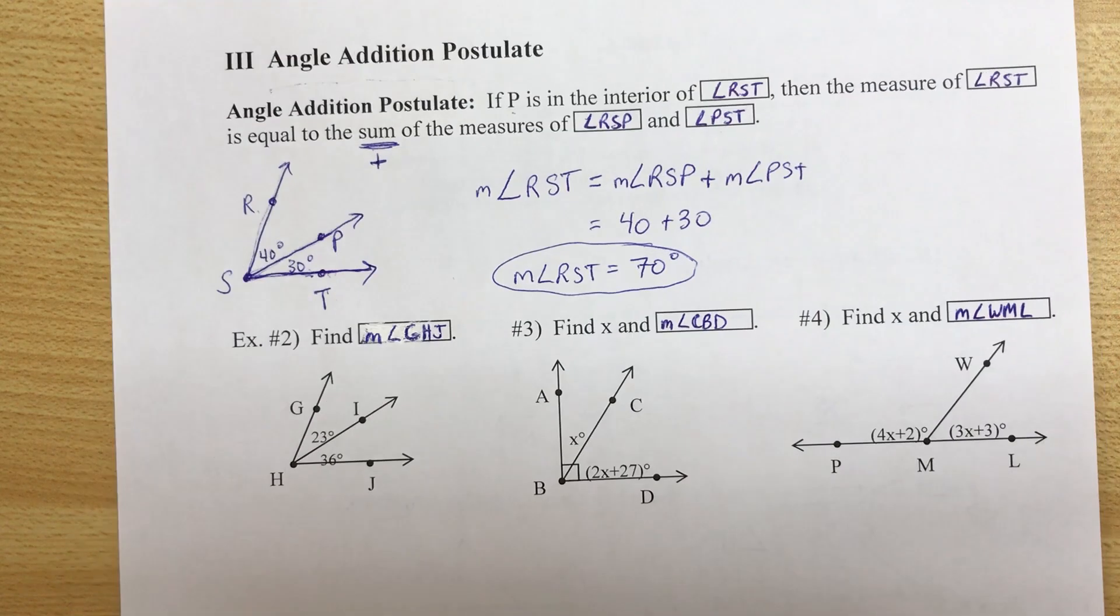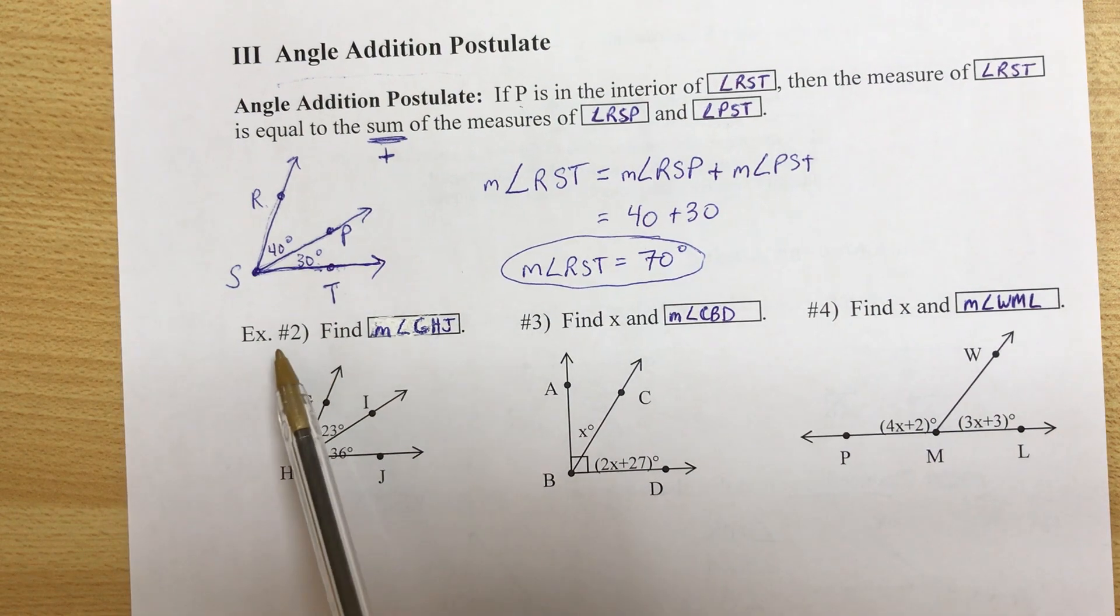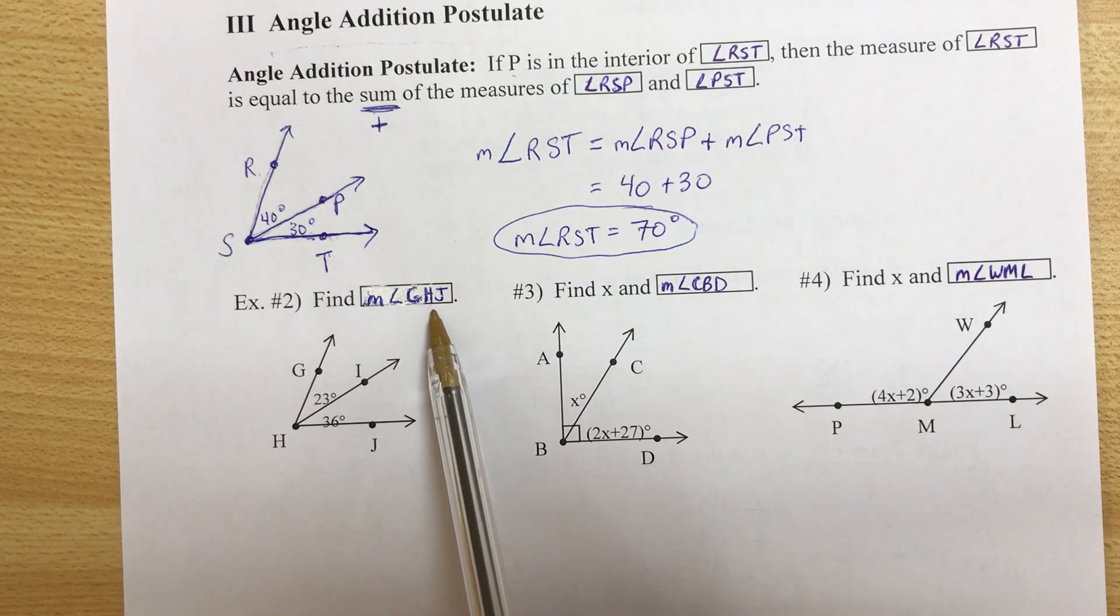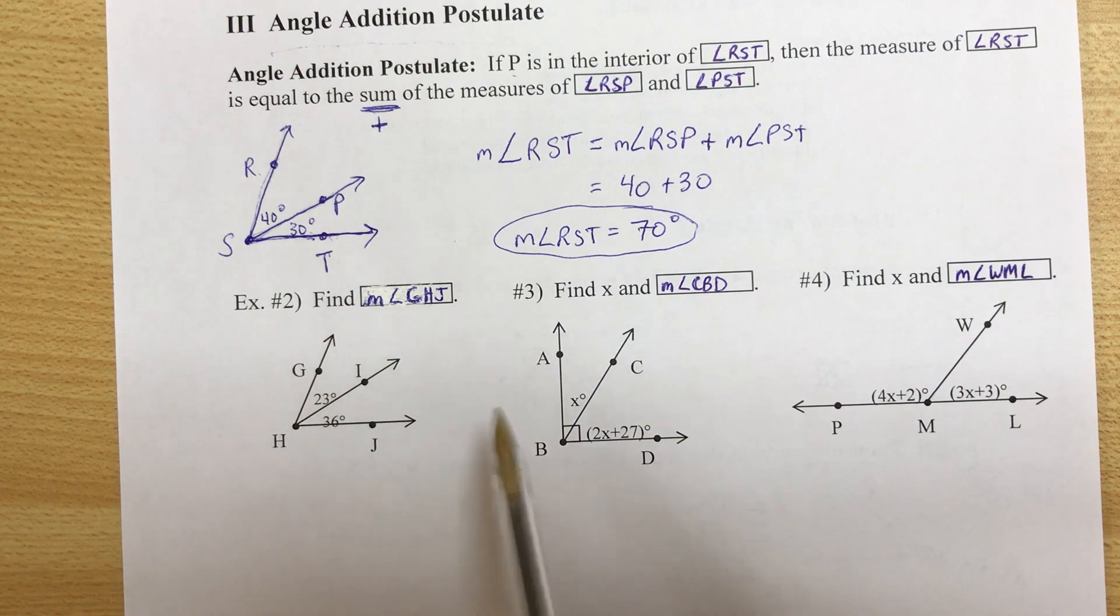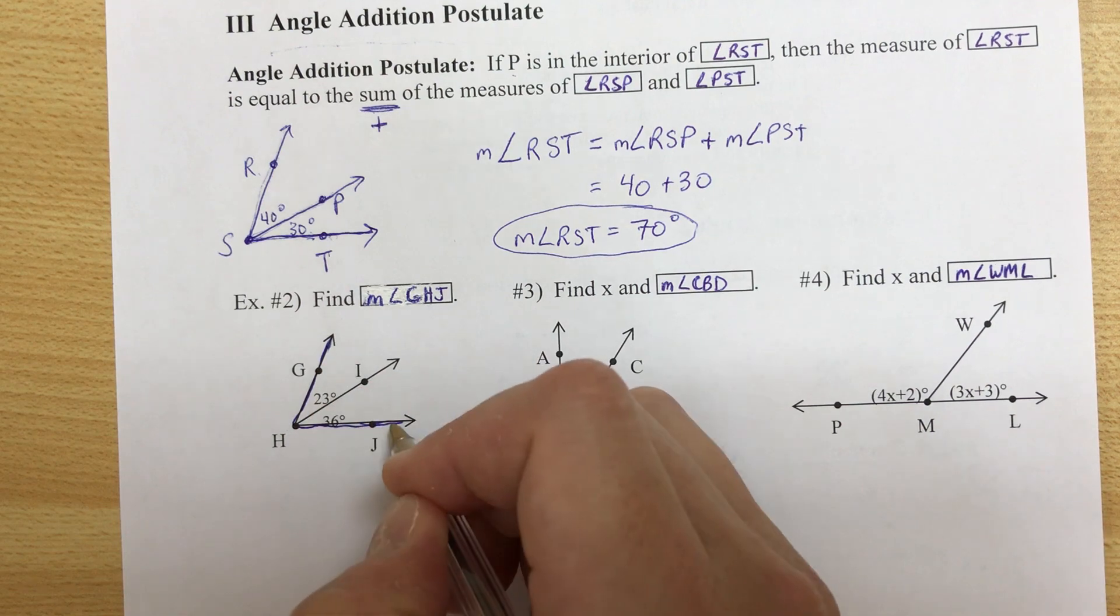Okay, we're back for part two now and for this part we're going to be doing some examples. So example number two, find the measure of angle GHJ. Let me trace that out.